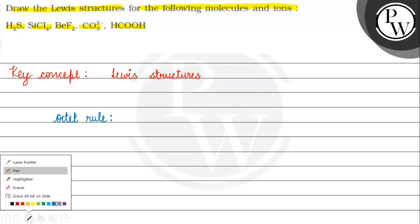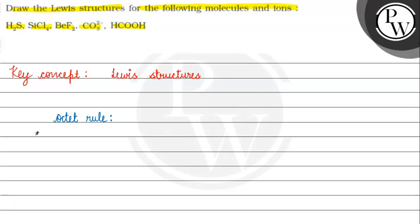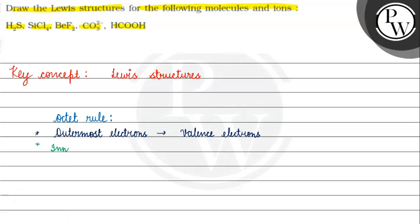The outermost electrons are those that participate in bonding. We call these valence electrons. The inner electrons do not play any part in bonding.